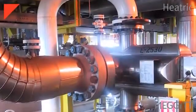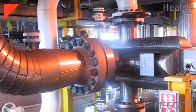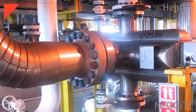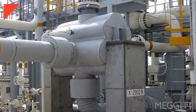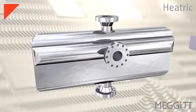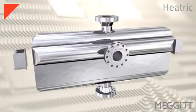The exchanger is connected to the customer's process piping by way of nozzles. The nozzles can be designed to meet the customer's individual requirements and typically use flanges, compact hubs, or weld preparations. Supports are then attached to the exchanger.